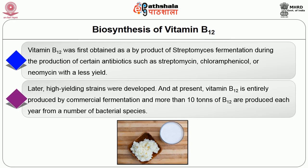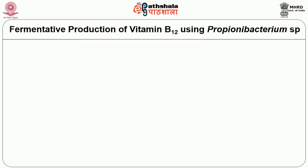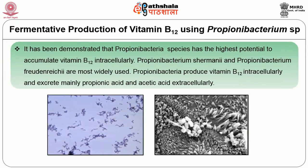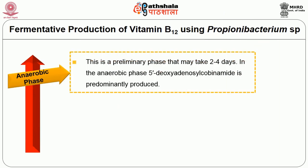Vitamin B12 was first obtained as a byproduct of Streptomyces fermentation during the production of certain antibiotics such as streptomycin, chloramphenicol or neomycin, with less yield. Later, high-yielding strains were developed and at present vitamin B12 is entirely produced by commercial fermentation, with more than 10 tons of B12 produced each year from a number of bacterial species. It has been demonstrated that Propionibacteria species have the highest potential to accumulate vitamin B12 intracellularly. Propionibacterium shermanii and Propionibacterium freudenreichii are most widely used. Propionibacteria produce vitamin B12 intracellularly and excrete mainly propionic acid and acetic acid extracellularly.